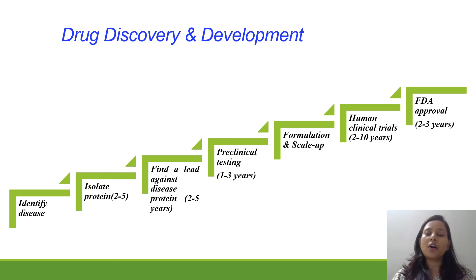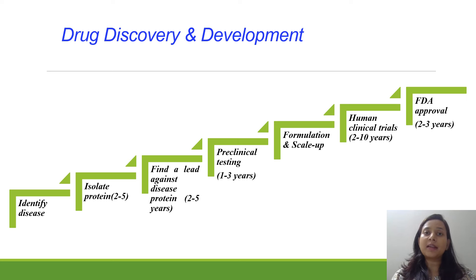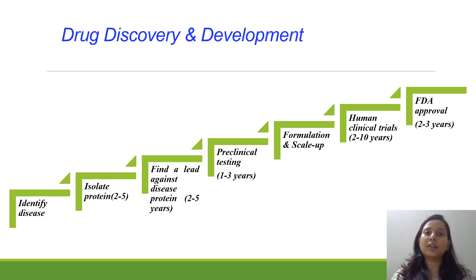During the drug discovery or development process, firstly we have to identify our disease and isolate that particular protein that plays an important role in that disease. Then we find the lead molecule that can act as a drug and has drug-like properties. Then we move ahead with preclinical testing, where we check the effects of the drug in different model organisms — that can be mice, monkeys, or anything.